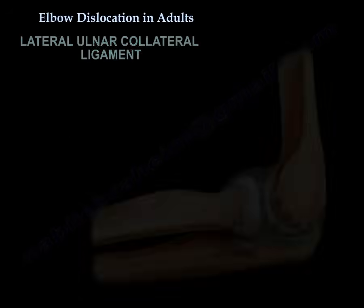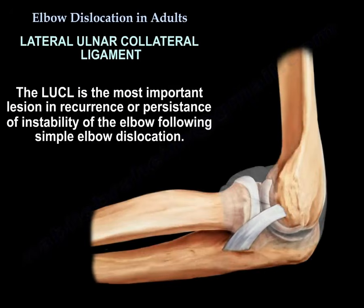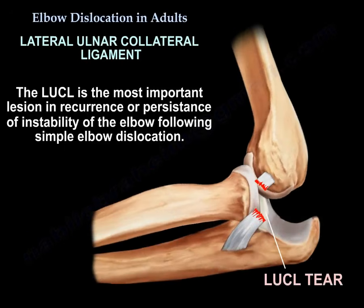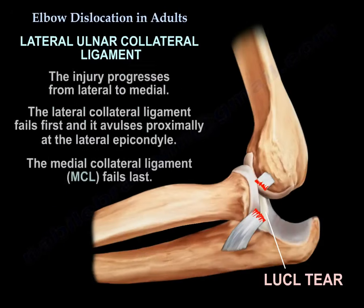The lateral ulnar collateral ligament (LUCL) is the most important lesion in recurrence or persistence of instability following simple elbow dislocation. The injury progresses from lateral to medial — the lateral collateral ligament fails first and avulses proximally at the lateral epicondyle. The MCL fails last.